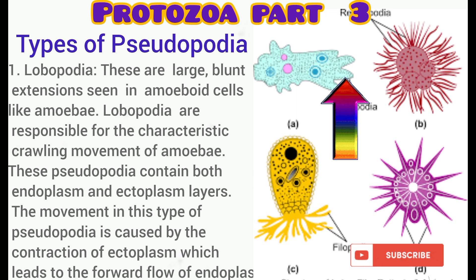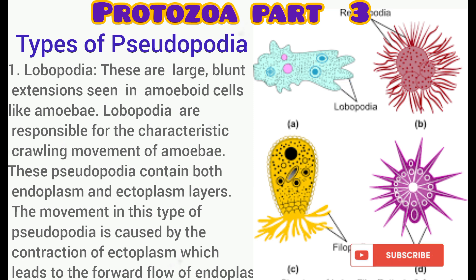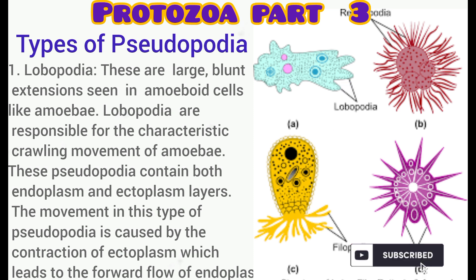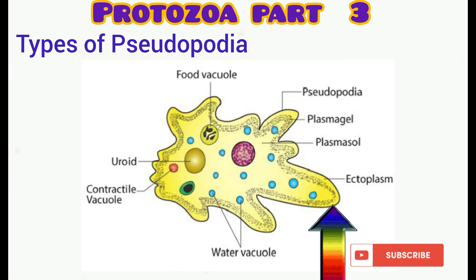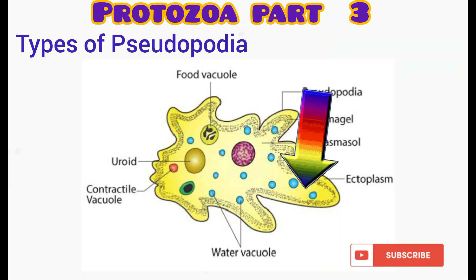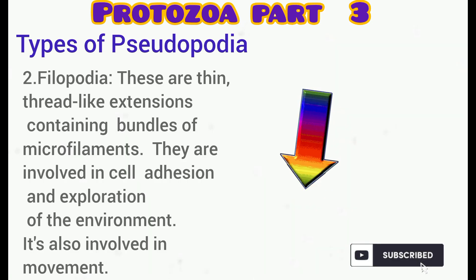The lobopodia are large blunt extensions that you can see in the amoeboid cell displayed on the screen. They are responsible for the crawling movement seen in amoeboid organisms and actually contain both the ectoplasm and the endoplasm.